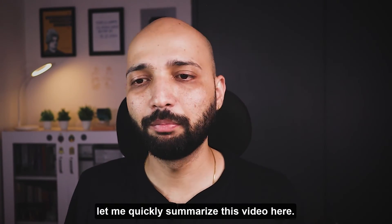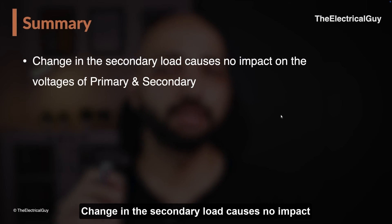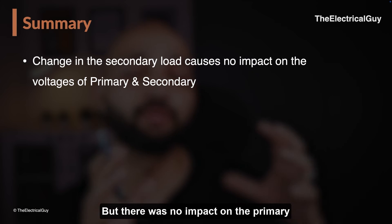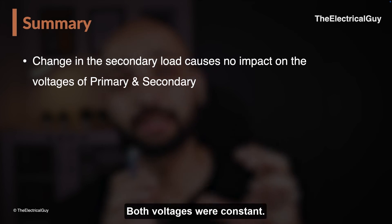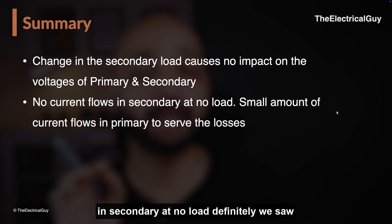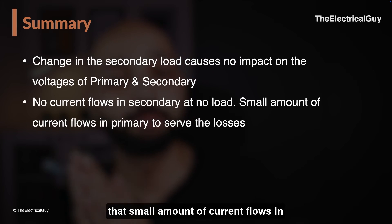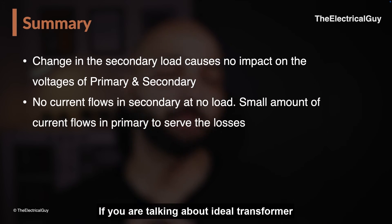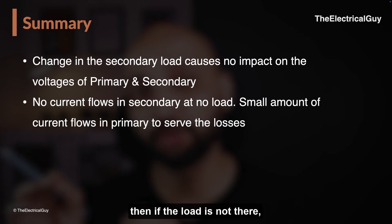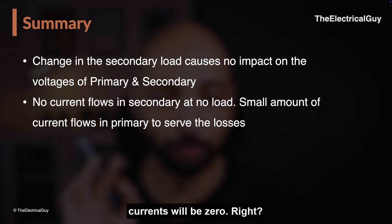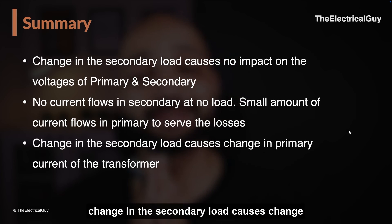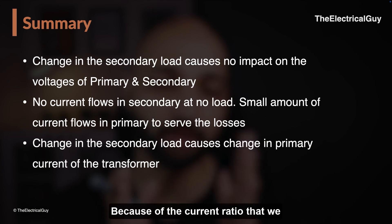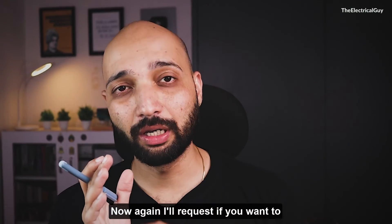Let me quickly summarize the video. First: a change in secondary load causes no impact on the voltages of primary and secondary — both voltages remained constant at different loads. Second: no current flows in the secondary at no load; a small current flows in the primary to serve losses in a practical transformer, but in an ideal transformer both currents would be zero at no load. Third: a change in the secondary load causes a change in the primary current, because of the current ratio.